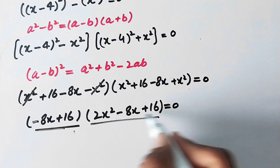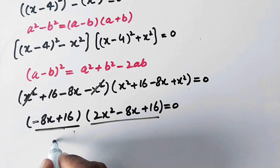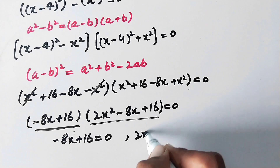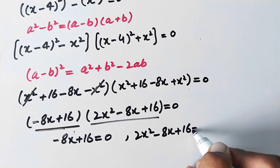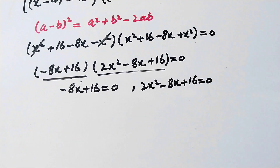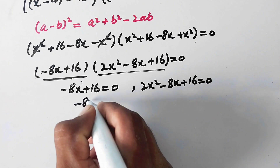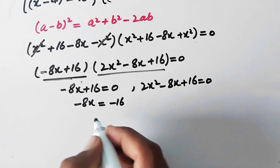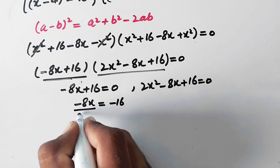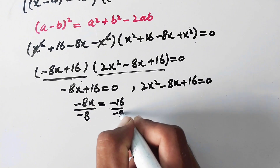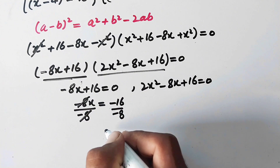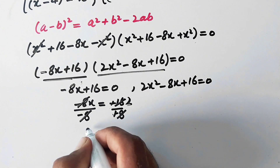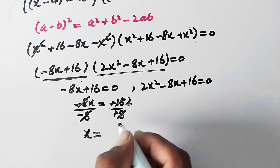We have two factors equal to 0, so we can write them separately: (-8x + 16 = 0) or (2x^2 - 8x + 16 = 0). For the first factor, -8x + 16 = 0, moving 16 to the other side and dividing both sides by -8, the 8s cancel and the negatives cancel, so we are left with x is equal to 2.